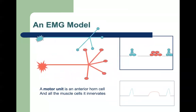Here's my model: a motor unit is the anterior horn cell in the spinal cord and all the muscle cells it innervates. In any major muscle there are a couple hundred muscle cells, not just three or four. The blue motor unit fires and fires, bump bump bump. The red one is different — it fires at a different rate. They have different shapes, and when you do a needle EMG you see different shapes of different motor units and begin to recognize that one is different from another.